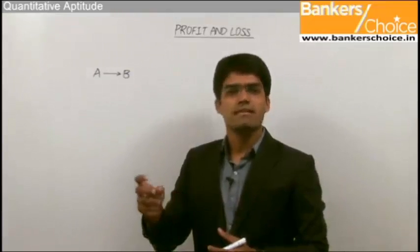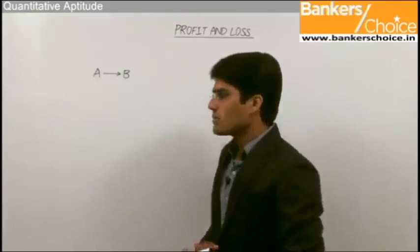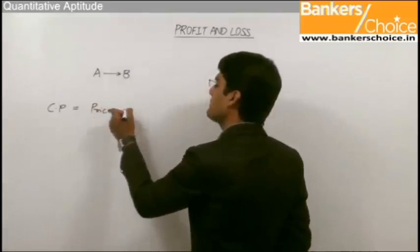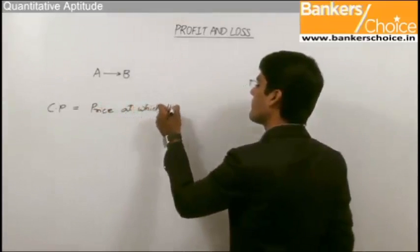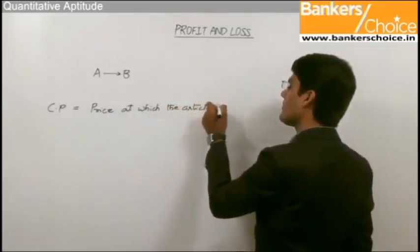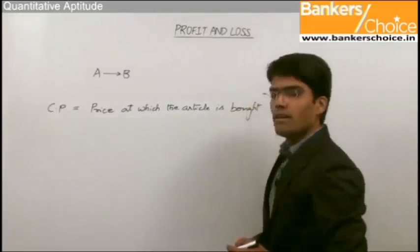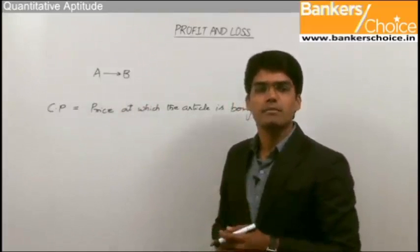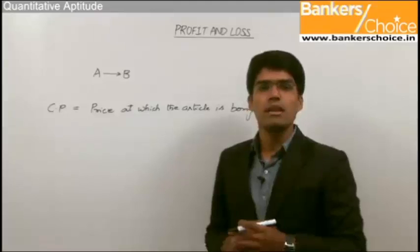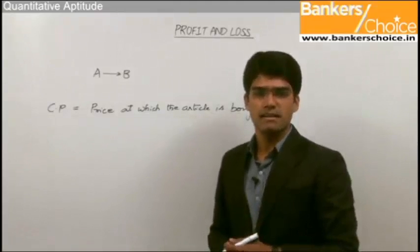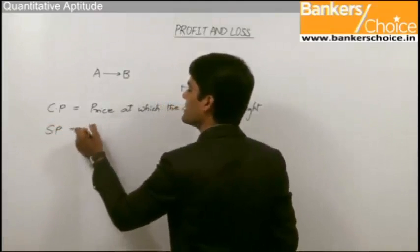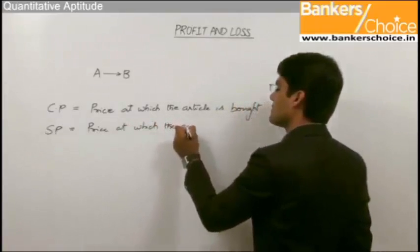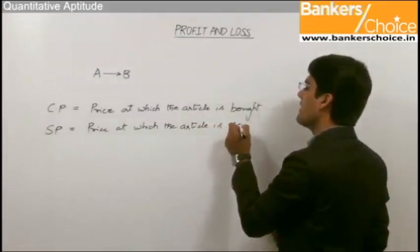In simple terms, cost price is the price at which you buy the article. So we can say cost price CP is equal to the price at which the article is bought. After buying the article, A sells the same article to person B at some value. The price at which A sells the article to B is called the sale price or the selling price of the article — the price at which the article is sold.